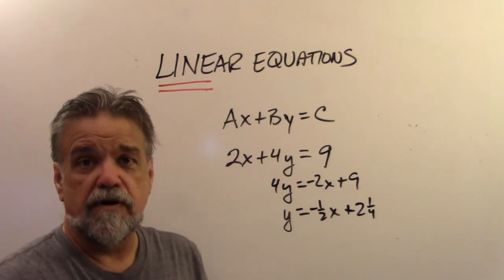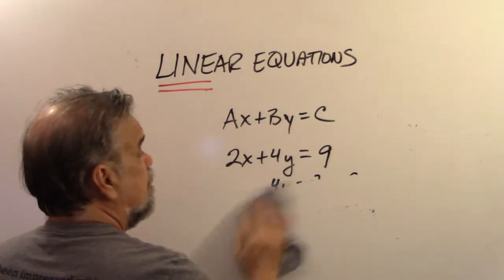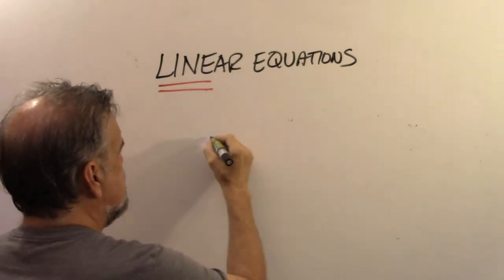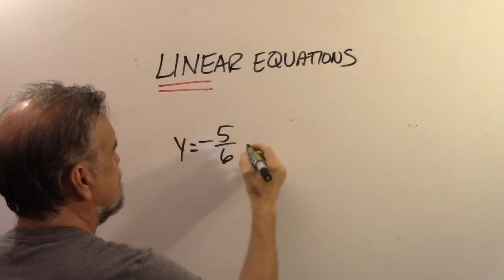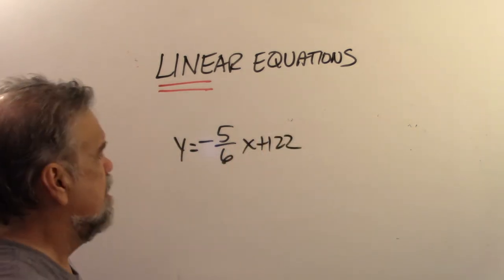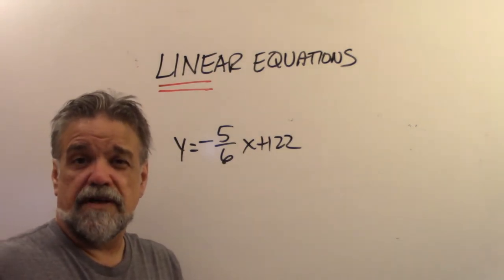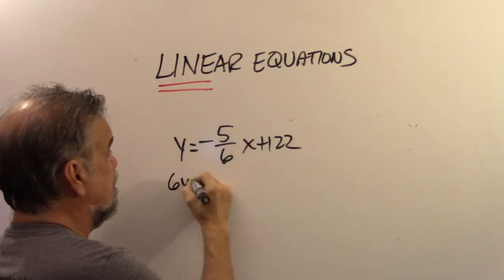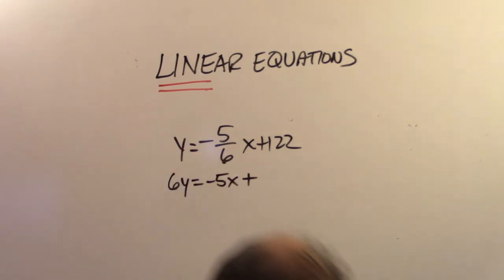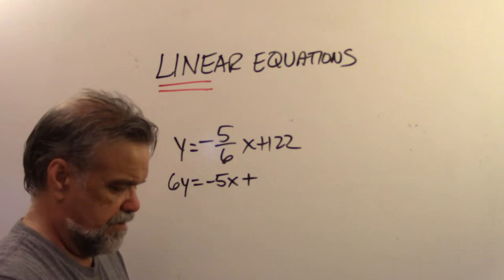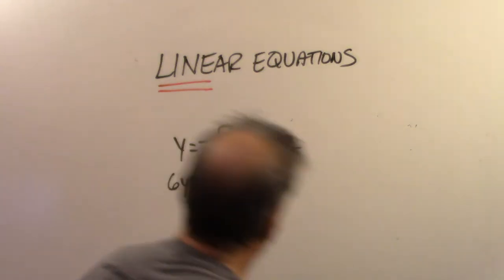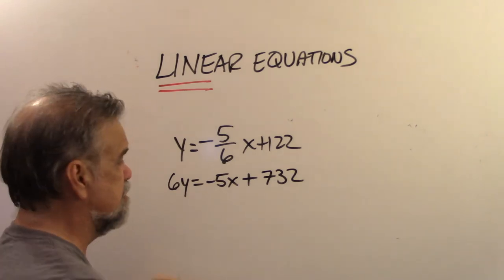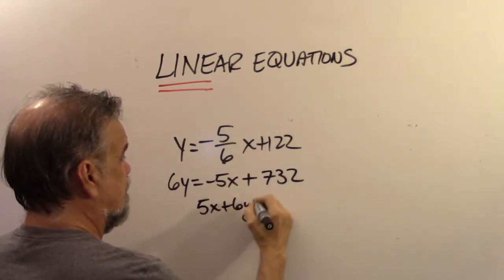To go from slope-intercept to standard form, let's use y = −5/6 x + 122. Standard form likes whole numbers, so the first thing I'll do is multiply everything by the denominator, 6: 6y = −5x + 732. Then get the x and y terms on one side: 5x + 6y = 732.